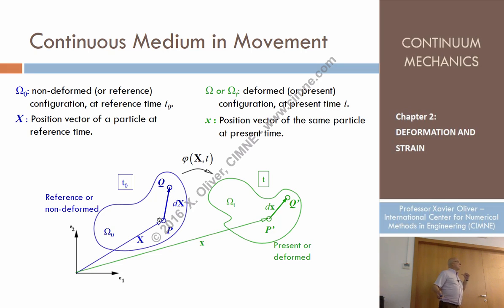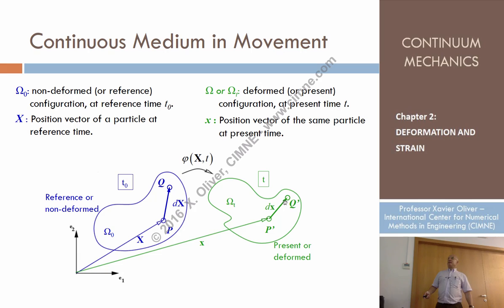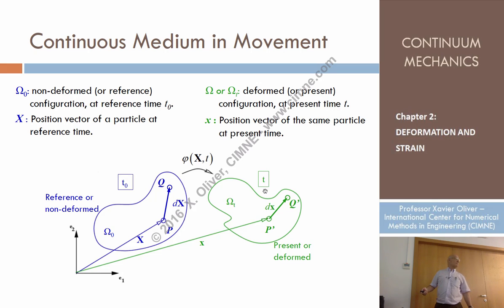Our concern is: what is that relative distance at the present configuration? At the present time t, particle Q has moved to position Q prime. In general, the relative position vector is not the same at the reference and present configurations. So d small x stands for the relative position of particles P and Q at the present configuration.